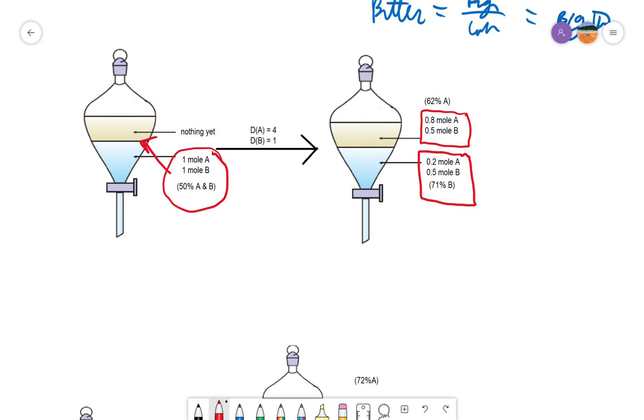B, of course, having a distribution coefficient of one would have 0.5 in the upper phase and 0.5 in the lower phase. So if we did one equilibrium, if we allowed it to separate just based on their solubilities, we would go from a 50-50 mixture to an upper phase, which is about 62% A and a lower phase, which is 71% B.